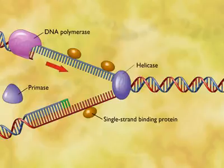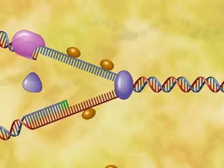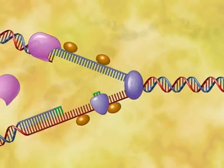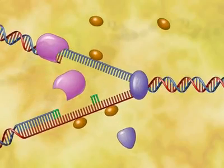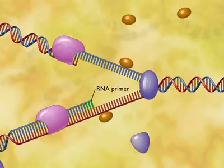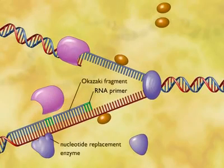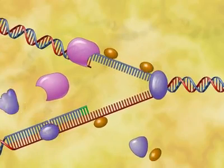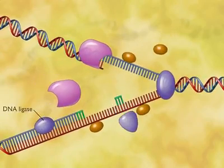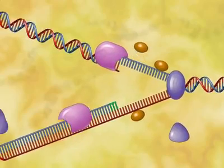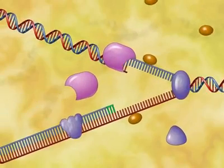The other strand is replicated discontinuously in the opposite direction with the formation of a series of short DNA segments called Okazaki fragments. Each Okazaki fragment requires a separate RNA primer. As the Okazaki fragments are synthesized, the RNA primers are enzymatically replaced with the appropriate DNA nucleotides and the individual Okazaki fragments are then bonded together into a continuous complementary strand.